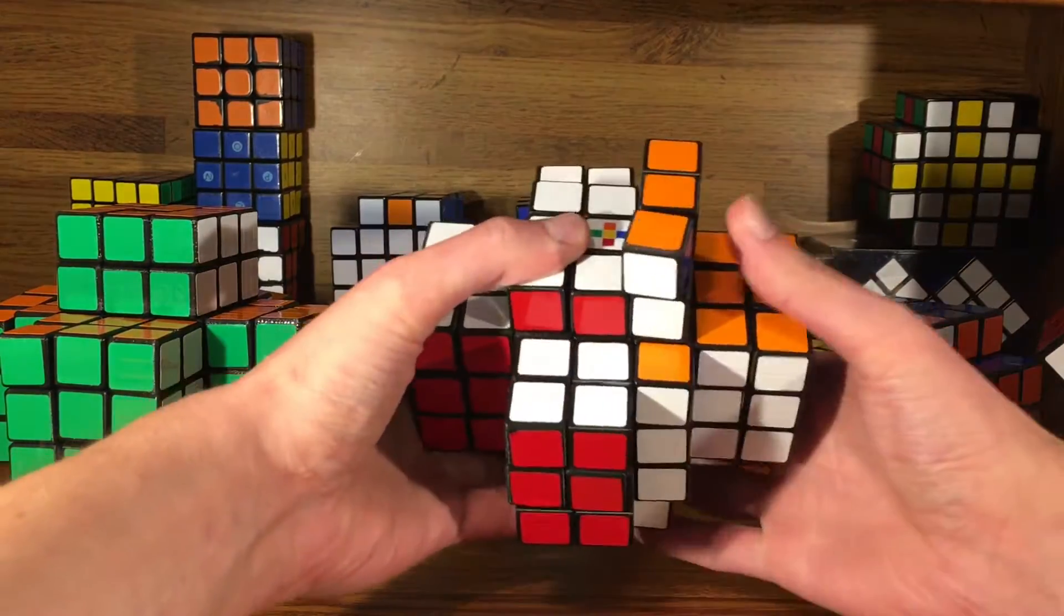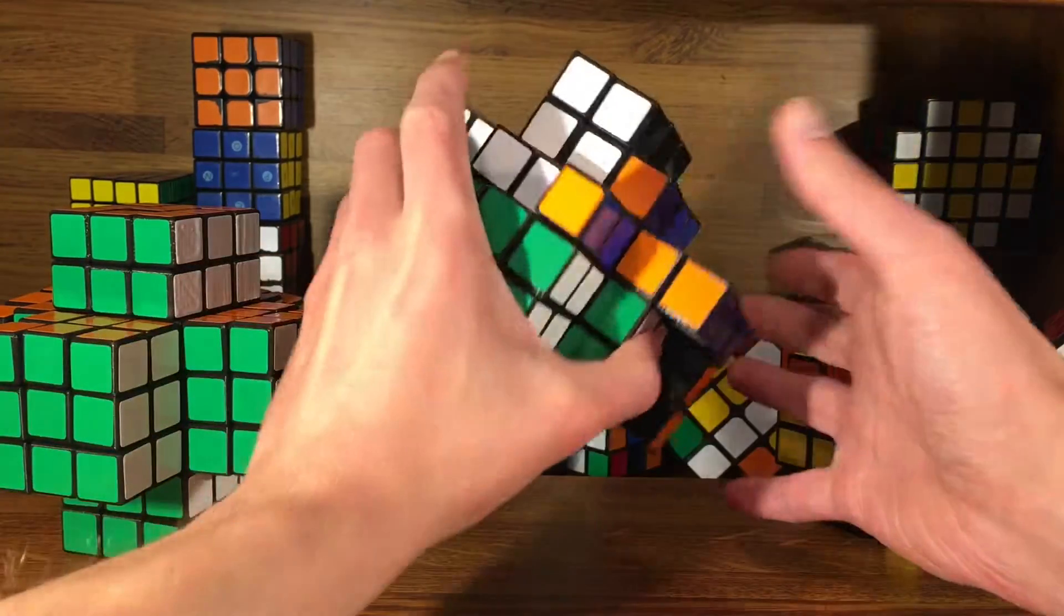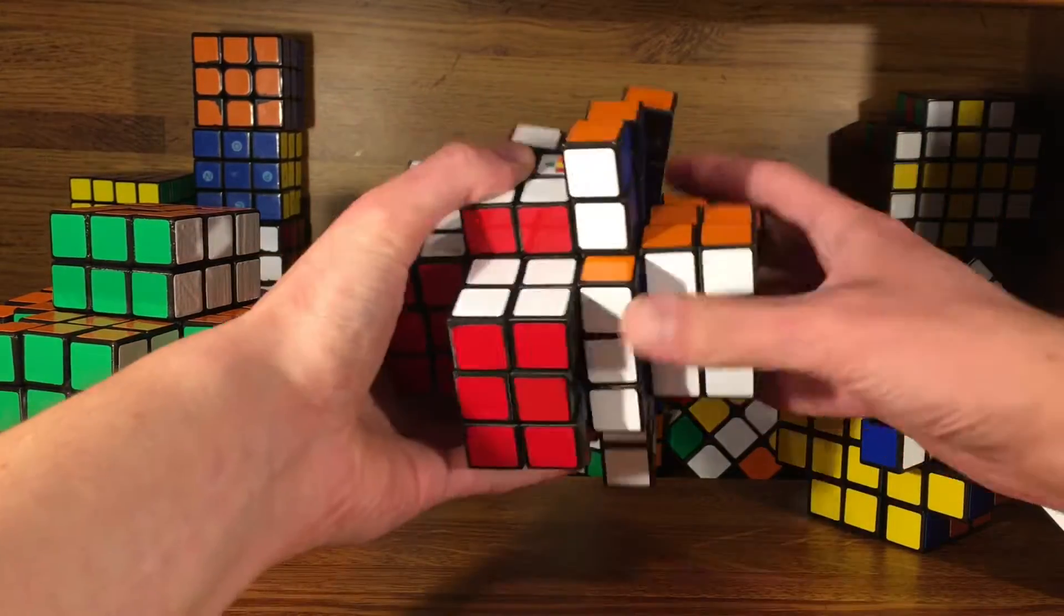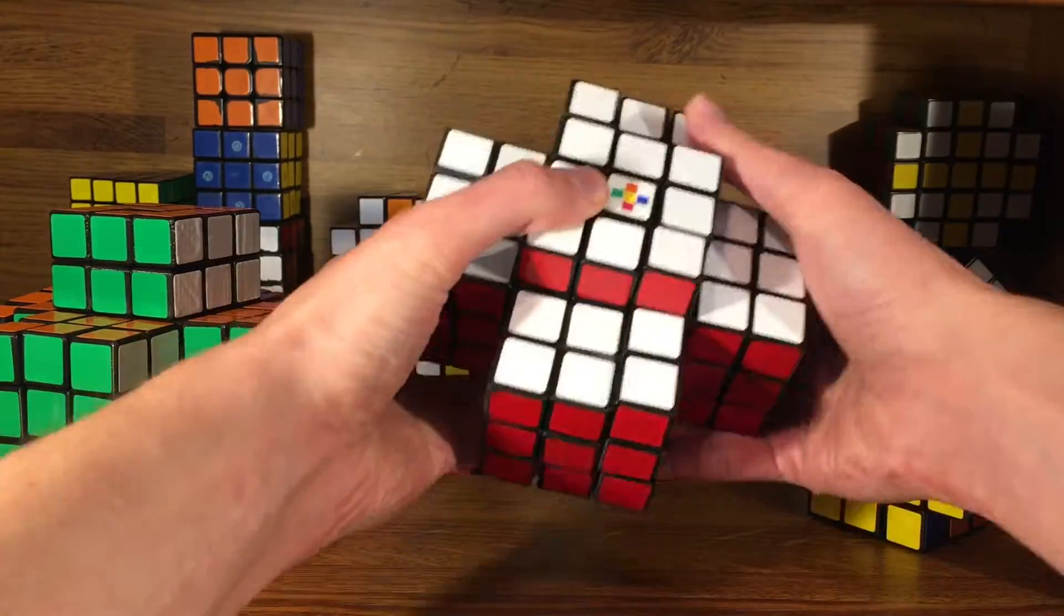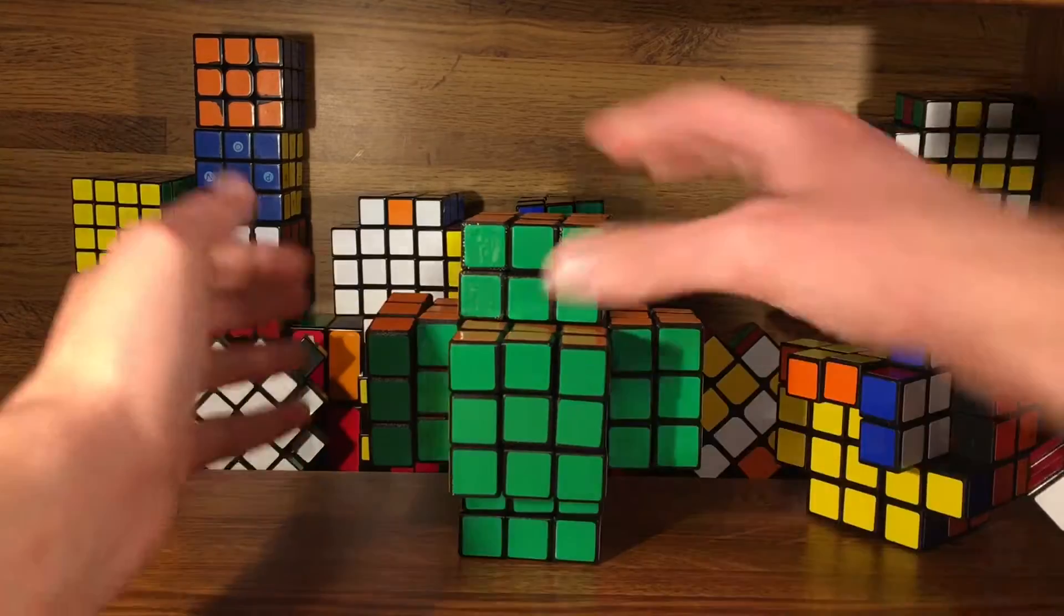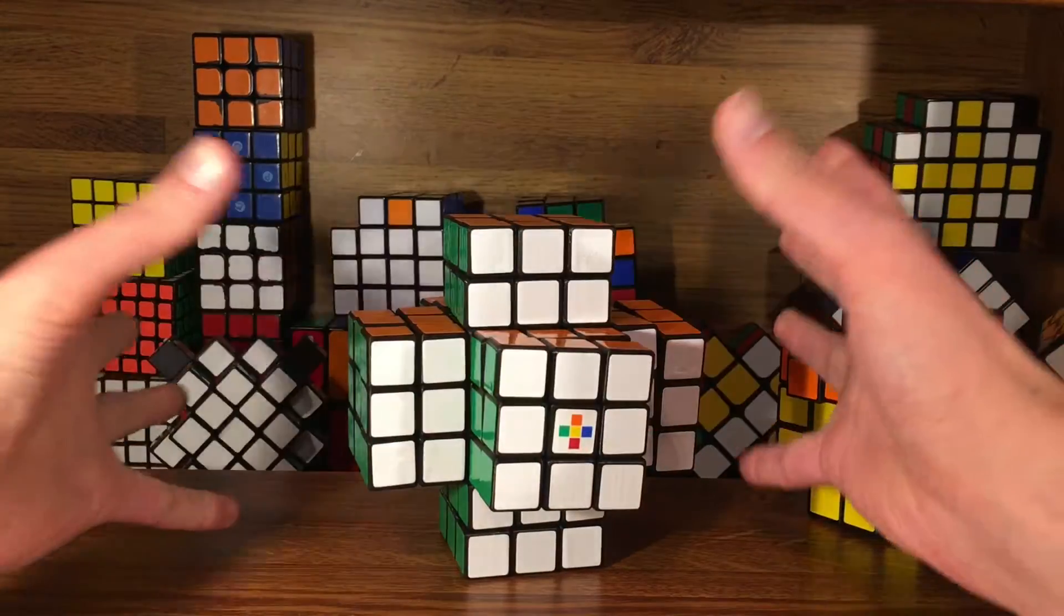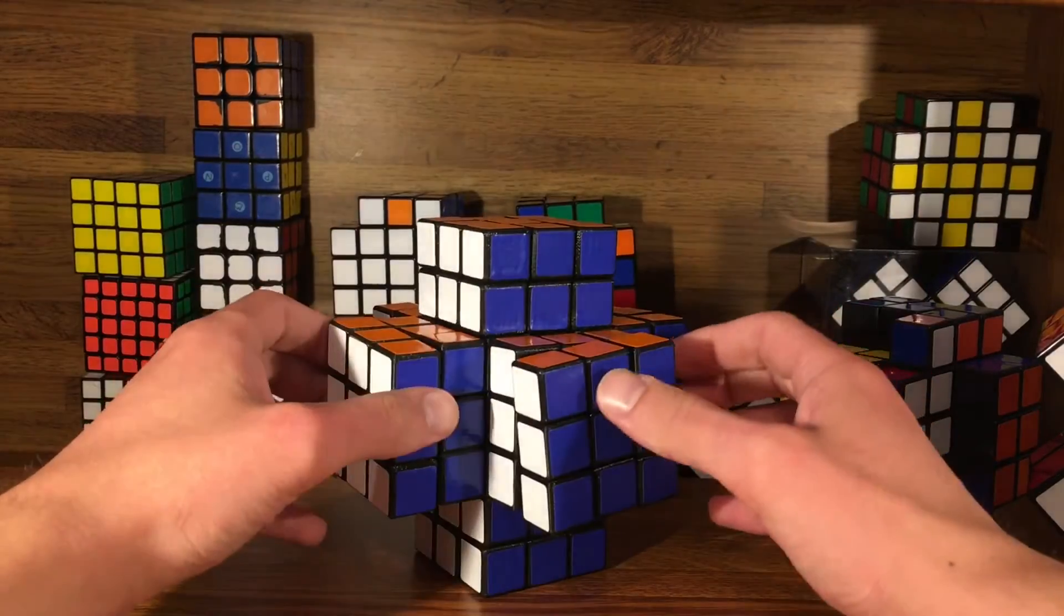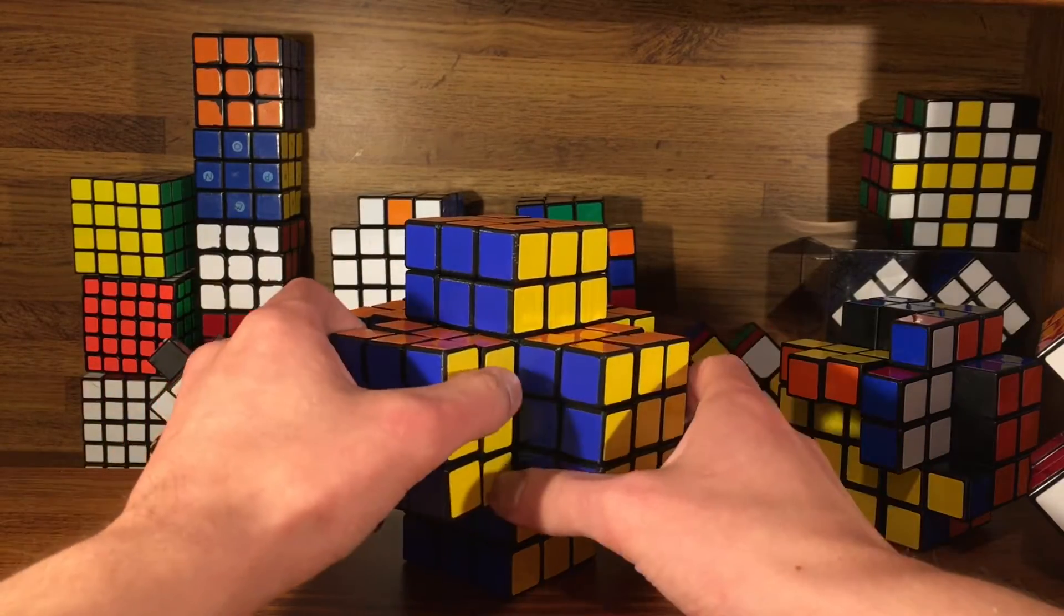Doing this allows the puzzle to change shape. So you get a shape-shifting puzzle. You can do this with any of these surfaces. You can pick any of them and extend them out by one or two. And that leaves a lot of different puzzle possibilities.